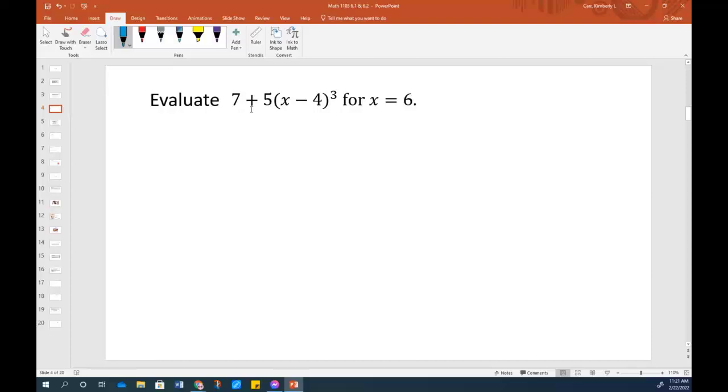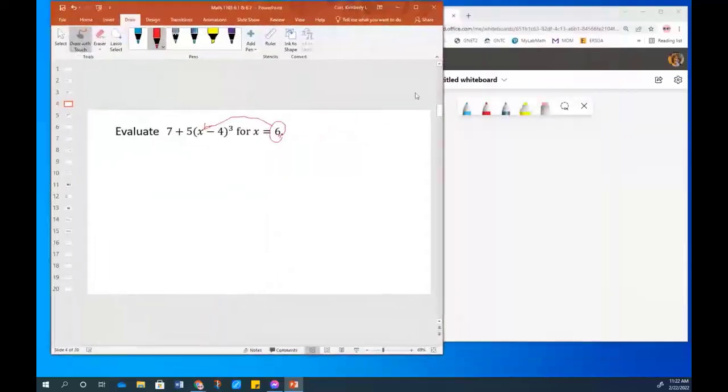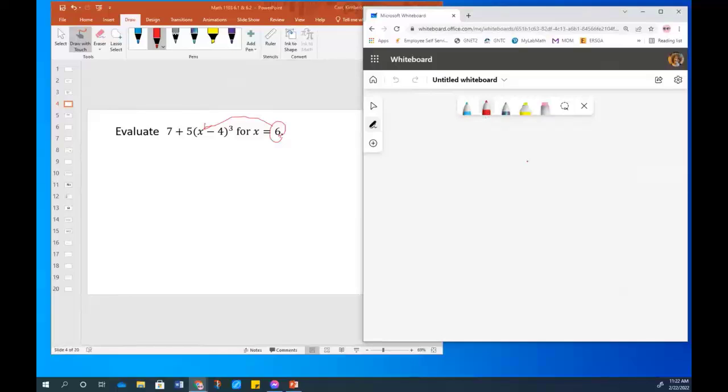So let's use that order of operations here. But notice it says evaluate. So evaluate is like when you plug it in. So what we're going to do is take this six and replace the x in here with that. Now I'm actually going to split my screen here because I can write better on this whiteboard. So I'll copy this over here. We have 7 + 5(x - 4)³. Now instead of x, though, I'm going to put six because I'm substituting and replacing that x with six. Minus four, close parentheses cubed.